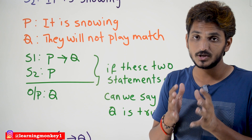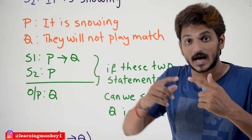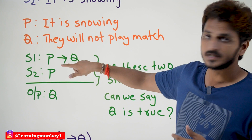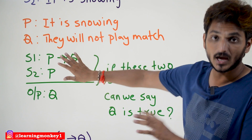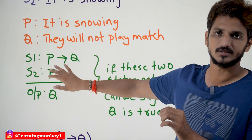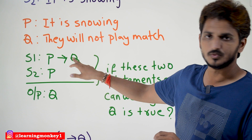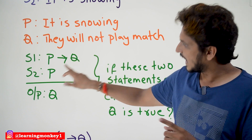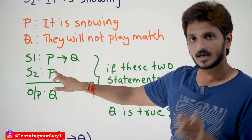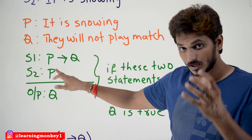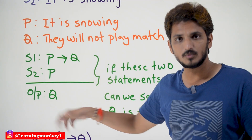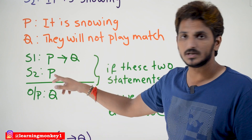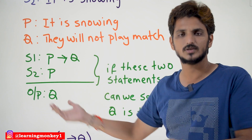This is the point you need to understand — this is what one of the inference rules is. If someone says that P implies Q is true and P is true, then you can definitely say that Q is going to be true, because from these two statements we can conclude that Q is true.